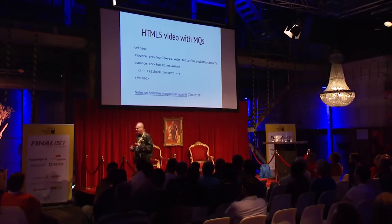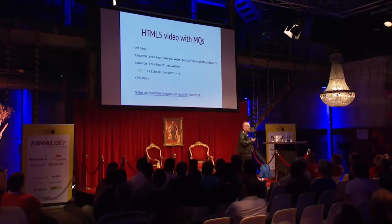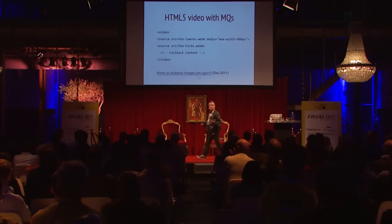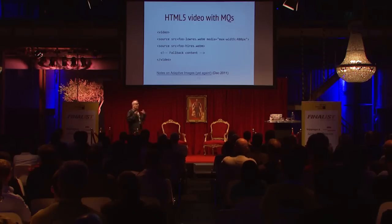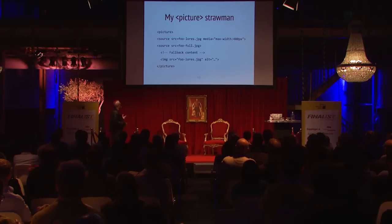I got to thinking — how could we do this in markup? I noticed a little-known part of the HTML5 video element spec: you can have a source pointing to a low-res video for narrow devices, and if that condition isn't satisfied, it grabs the high-res version. This has been in the spec since about 2006-2007. So I thought, why don't we repurpose this and make a new element for images? I blogged this and called it the picture element.